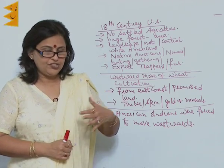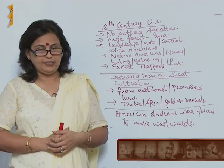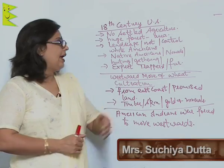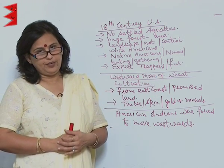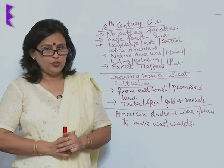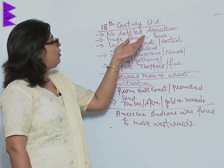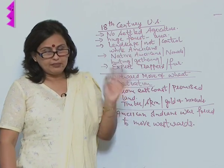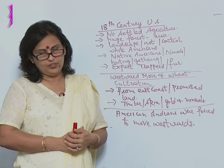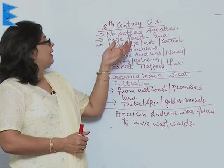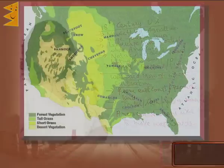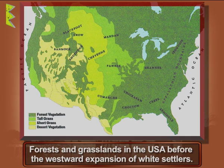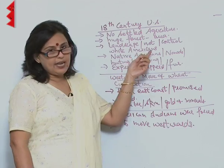Now let's travel towards the Atlantic to the US and see the condition of America in the 18th century. First of all, we see that there was nothing called settled agriculture, and a huge forest area was there — that is, the land was actually under forest.